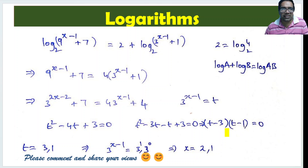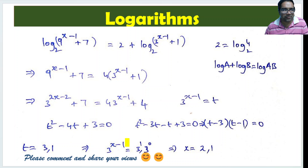That means t is either 3 or 1. Recall that t equals 3^(x-1). So 3^(x-1) equals either 3 or 1. Now 1 means 3^0, and 3 means 3^1.